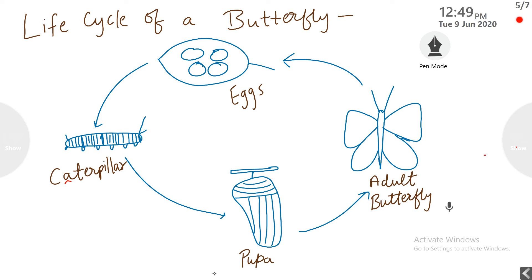This is the diagrammatic representation of the life cycle of a butterfly. Firstly, an adult butterfly lays eggs, and then a caterpillar hatches. The caterpillar is completely different from the adult butterfly — there is no resemblance between them. But then the caterpillar undergoes metamorphosis and becomes a pupa, and later the pupa becomes an adult butterfly.